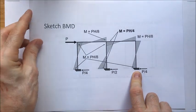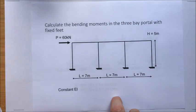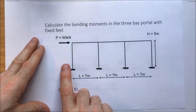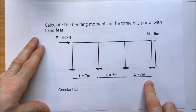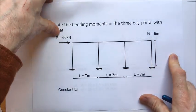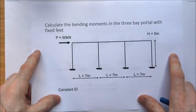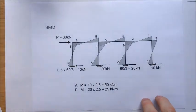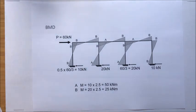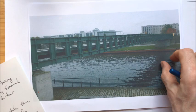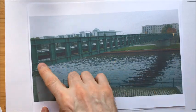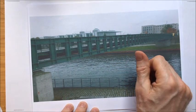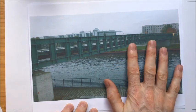Here's an exercise for you to have a go at. We looked at a two-bay frame — now try a three-bay frame: point load, three bays, height of five meters. Pause the video to have a crack at it. We're now one step closer to being able to analyze a multi-storey frame structure. Don't forget to have a go at the exercises, and thank you for watching.